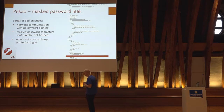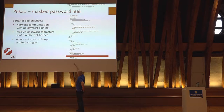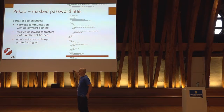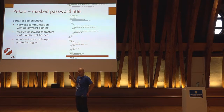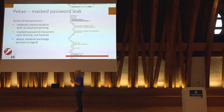Another problem spotted in another application: masked password leak. This was a series of bad practices. Network communication with no certificate pinning — we'll get back to that. Masked password characters were sent directly. But the third issue is something really bad: the whole network data sent and received was also printed to LogCat. It's quite easy for malware to check LogCat content, and after a few login sessions, an attacker able to access this local content could reconstruct the whole password.